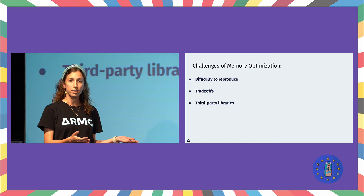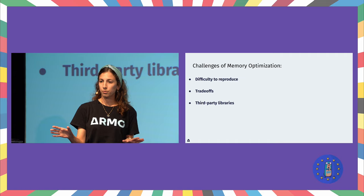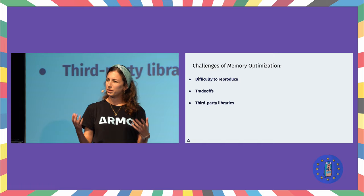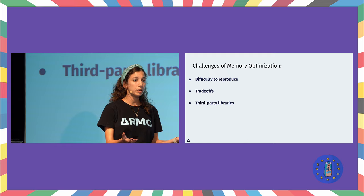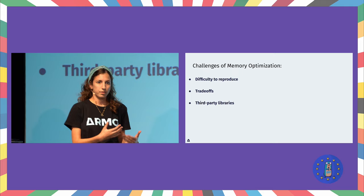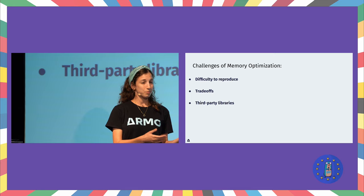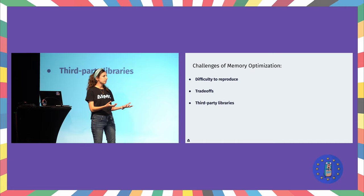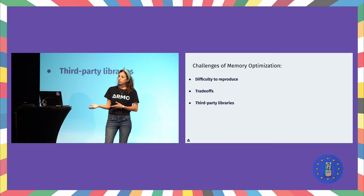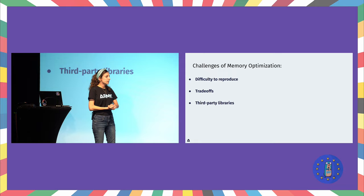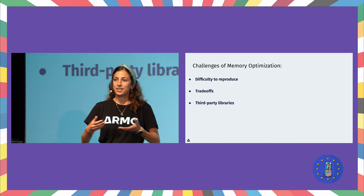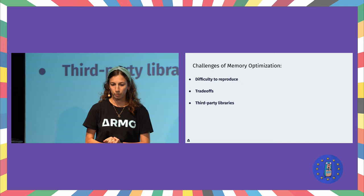We've got some trade-offs. If you want to improve memory, it may come at the cost of other things. When we start writing our code, we'll often go for simplicity and readability — we're an open-source project, we want other people to read our code, understand it easily, and contribute. That's often the first thing we look for when writing code, and that doesn't mean the code is the most efficient memory-wise. There's also maintainability. Another thing is performance — improving your memory management may improve performance, but it may also introduce other performance problems. For example, reducing memory usage by caching data to disk may take longer to retrieve that data later.